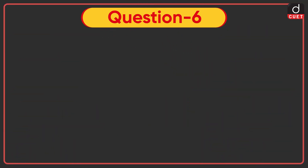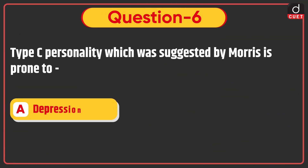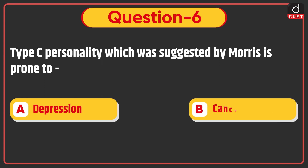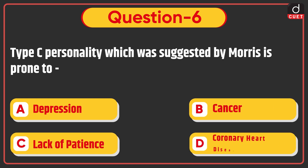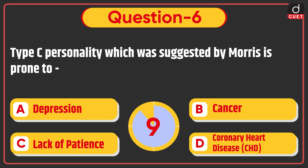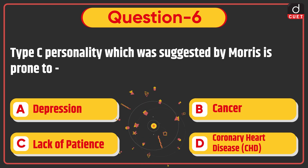Next question: Type C personality, which was suggested by Maurice, is prone to — depression, cancer, lack of patience, or coronary heart disease? The correct answer is option B: cancer.